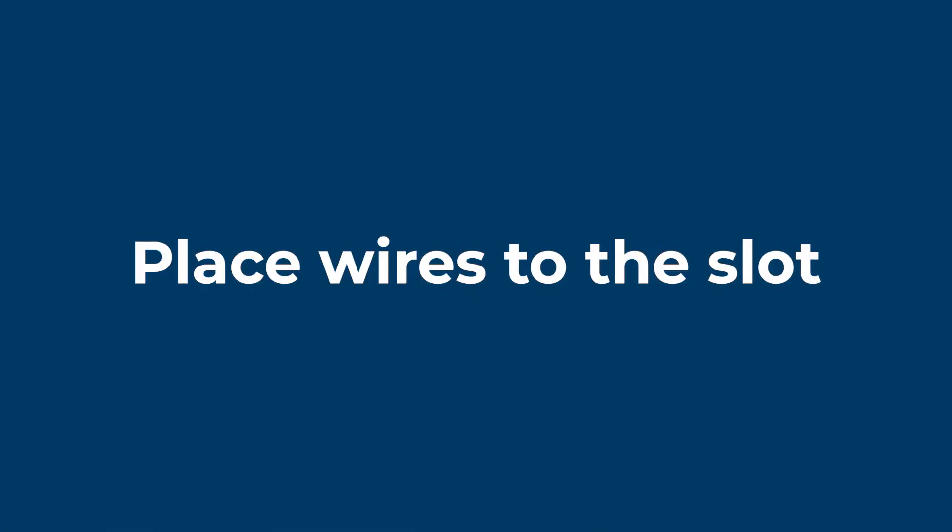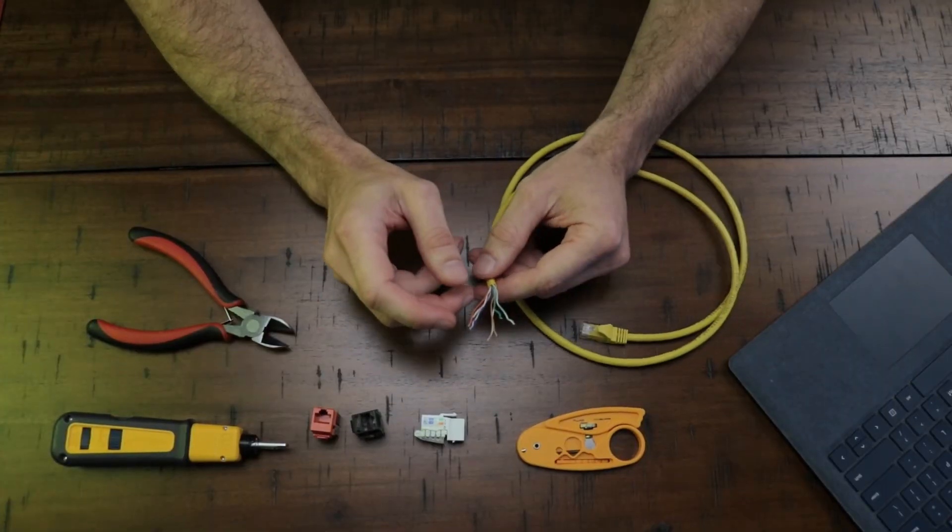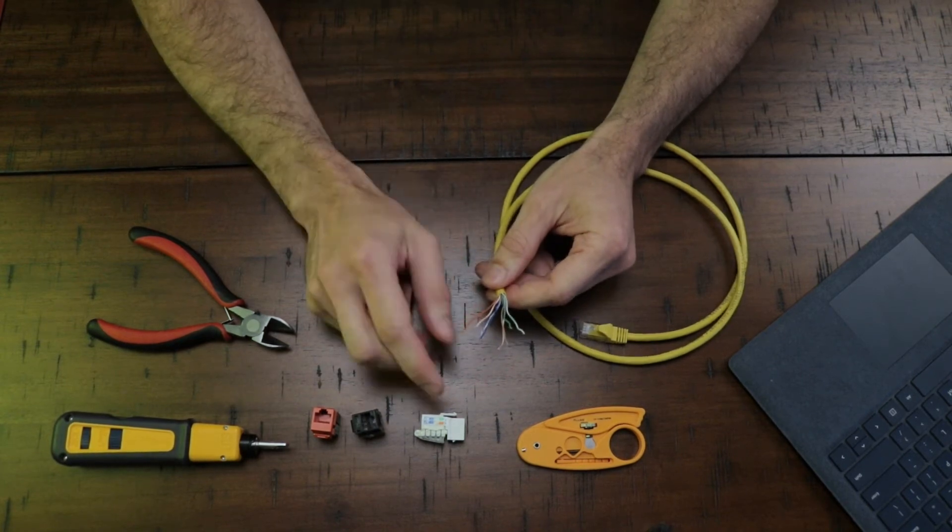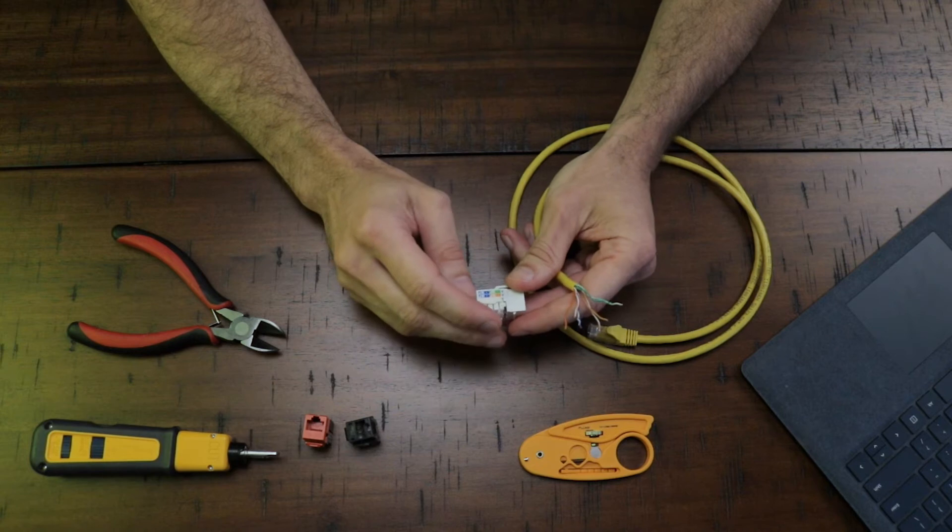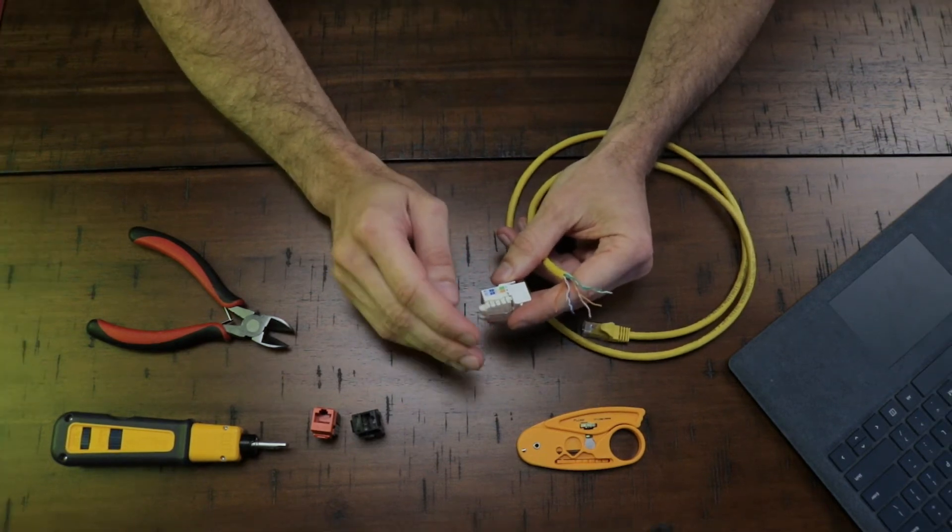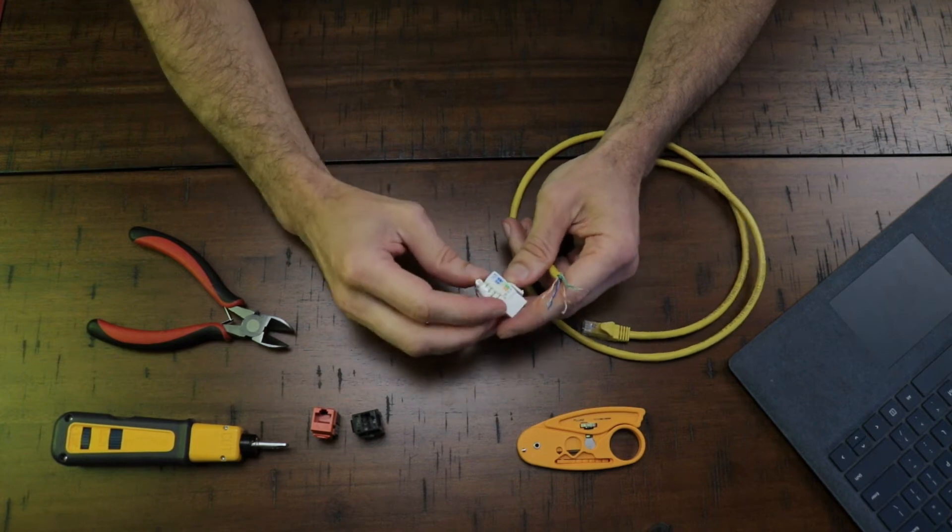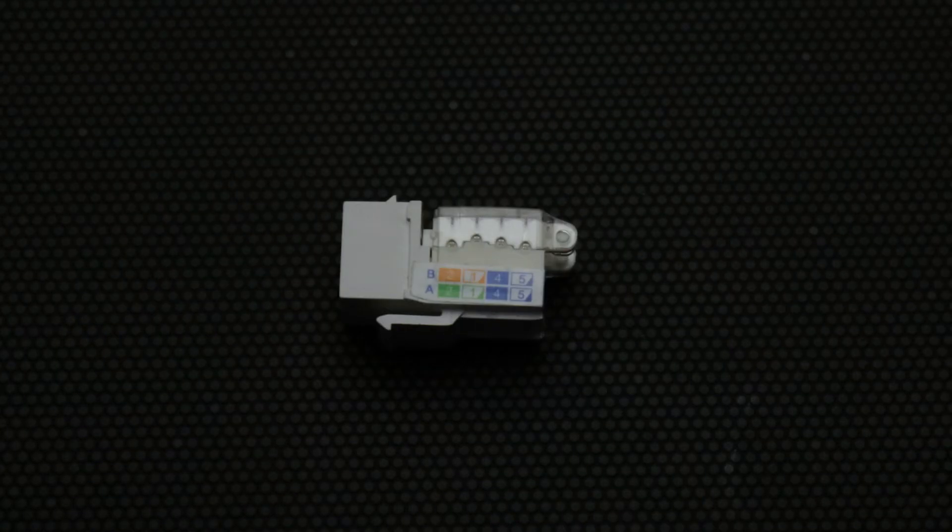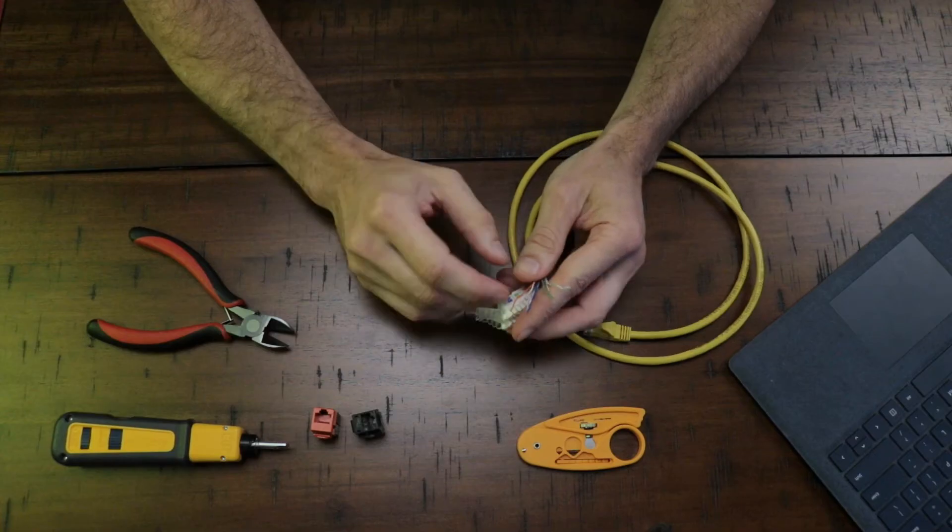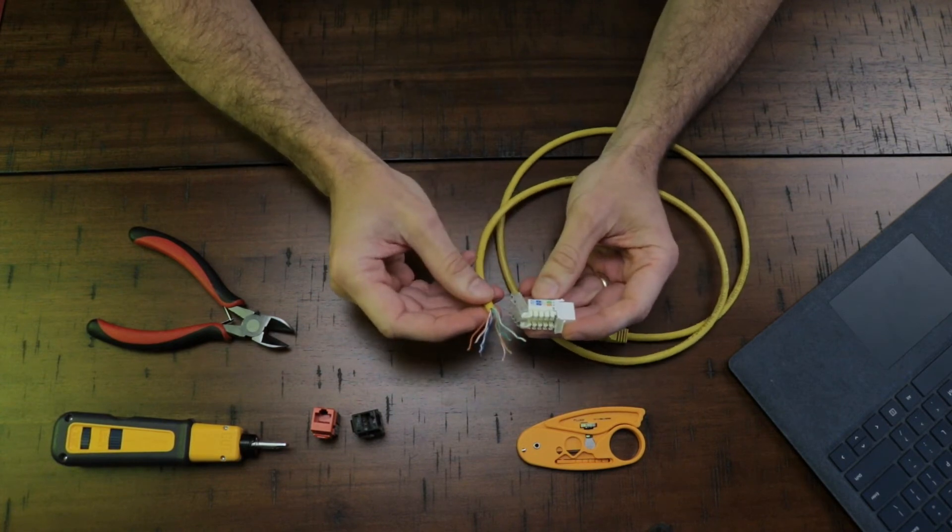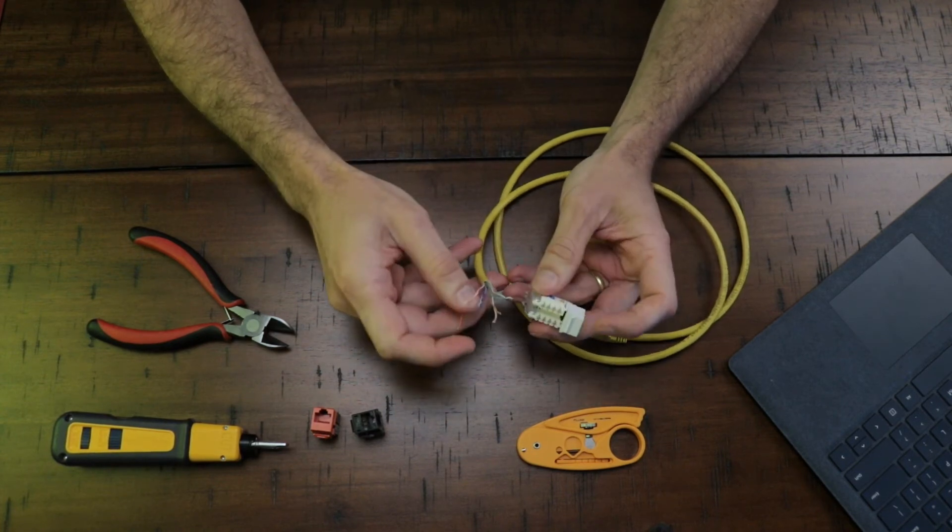The fourth step is to place each wire to the keystone jack. In my demonstration, I'm gonna stick with the standard T568B, so it's gonna be the first line in here. I'm gonna show this in the video. So let's do that and start with the blue one.